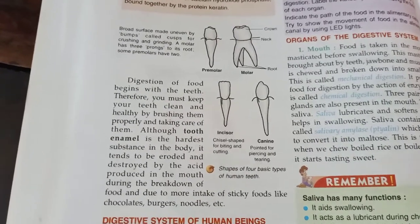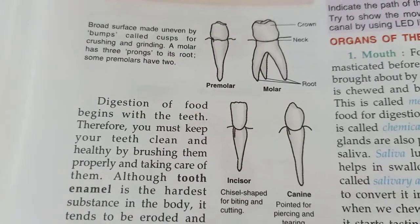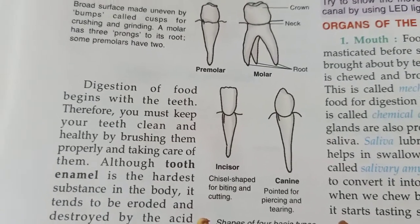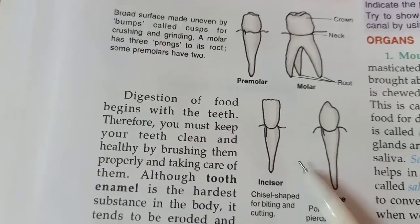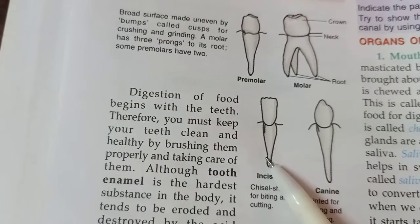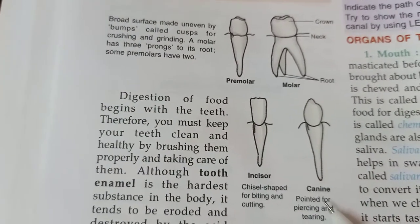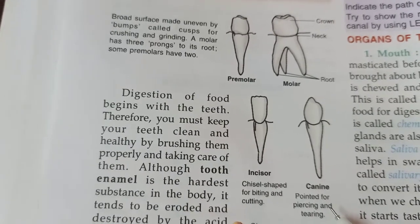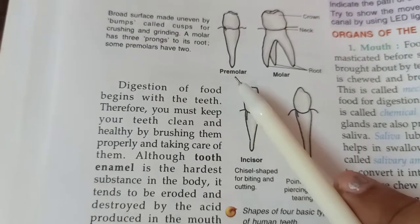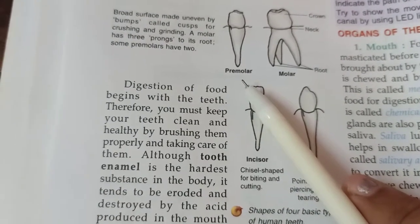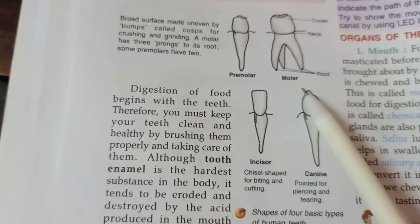I'll show you the diagram of the incisor. This type of teeth is known as incisor teeth, and incisors are responsible for biting and cutting off food. The canines are the pointed ones and are responsible for piercing and tearing of food.